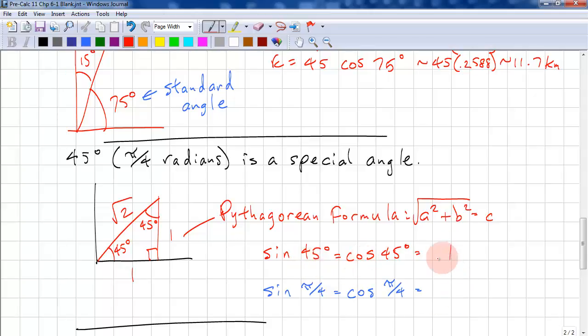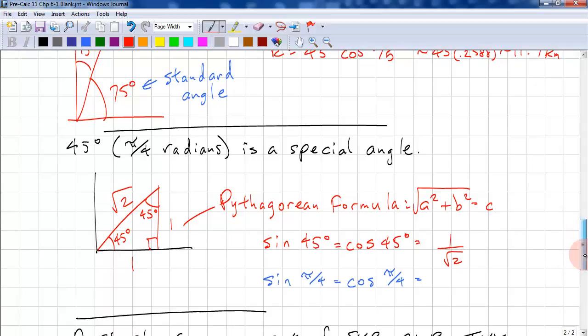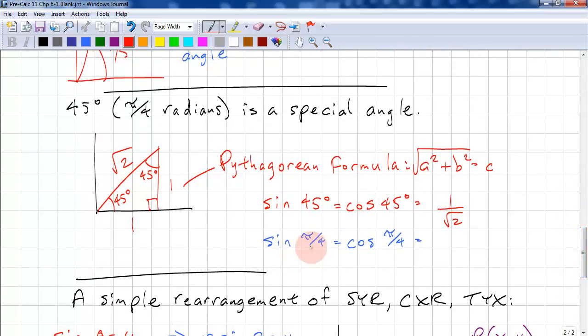And sine 45 equals cosine 45, so we have 1 over root 2. If we're working in radians, sine of pi over 4 equals cosine pi over 4, which is 1 over root 2 as well. So, it doesn't matter whether we're working in degrees or radians, these ratios remain the same.